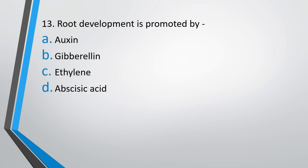Question 13: Root development is promoted by — auxin, gibberellin, ethylene, or abscisic acid. The correct answer is Option A, auxin.